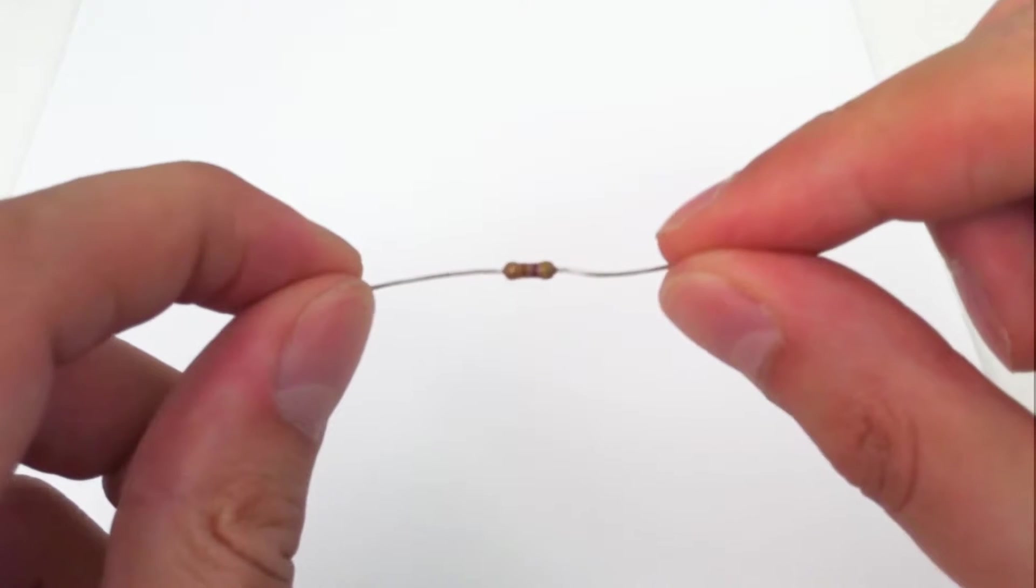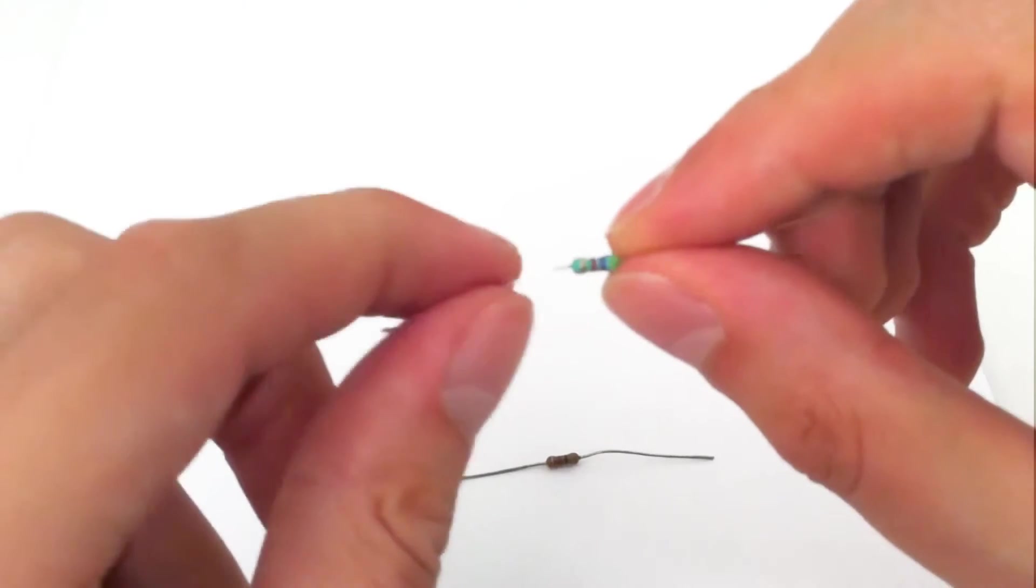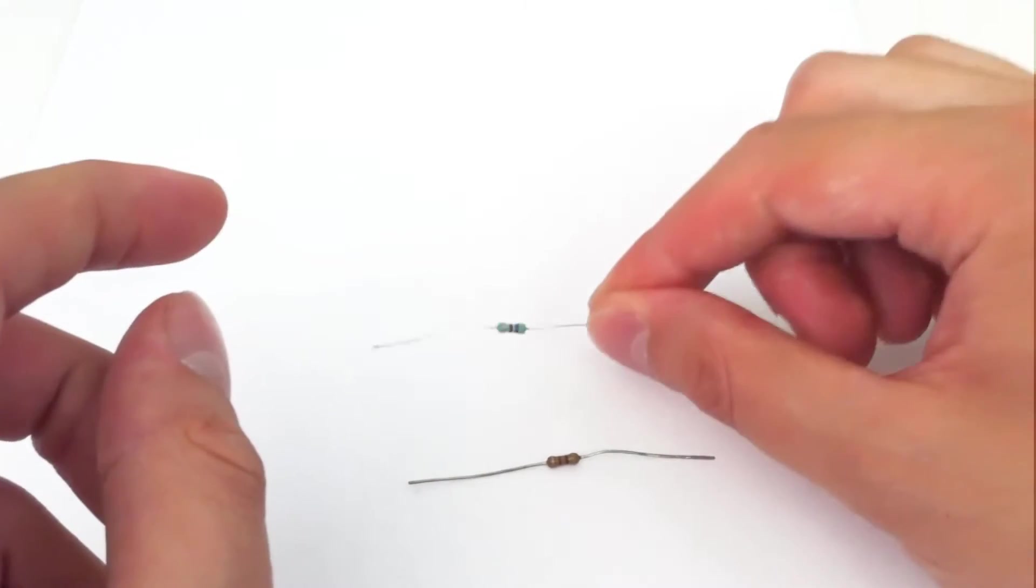Now the two types of resistor we normally use in an electronic project are these: this dark brown one, a carbon film resistor, and this blue one, a metal film resistor.